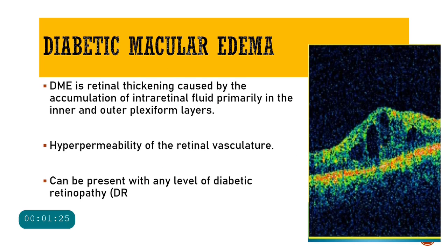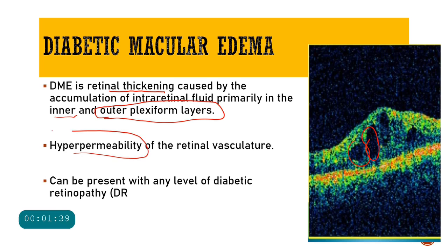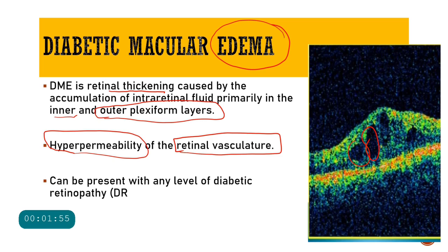Diabetic macular edema is retinal thickening caused by accumulation of intra-retinal fluid, primarily located in the inner and outer plexiform layers. This happens because of hyperpermeability — excessive leakage of the retinal vasculature. As the retinal vasculature becomes leaky, it causes accumulation of fluid within the layers of the retina, leading to swelling of the macula in diabetic patients.